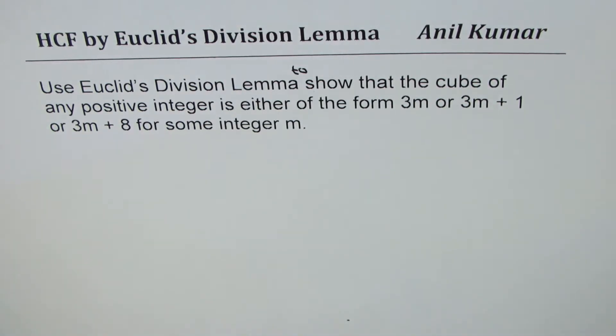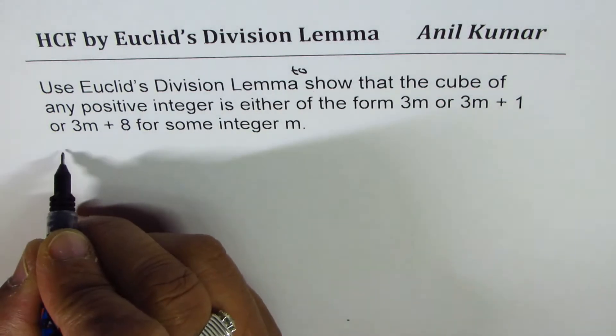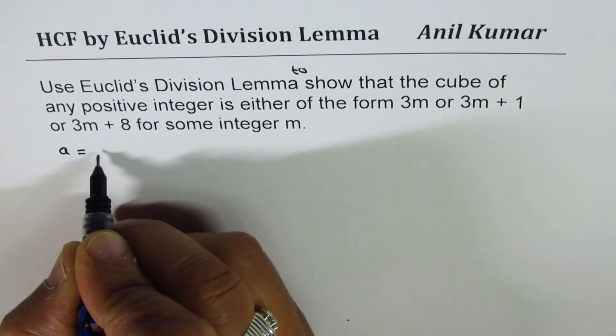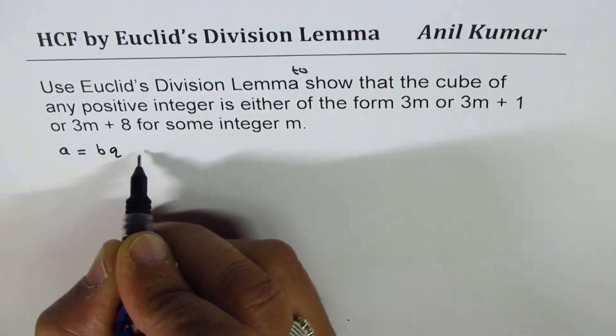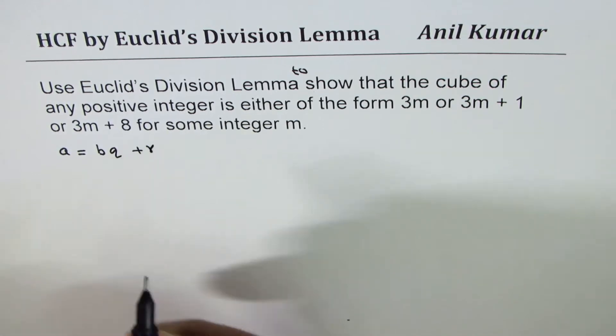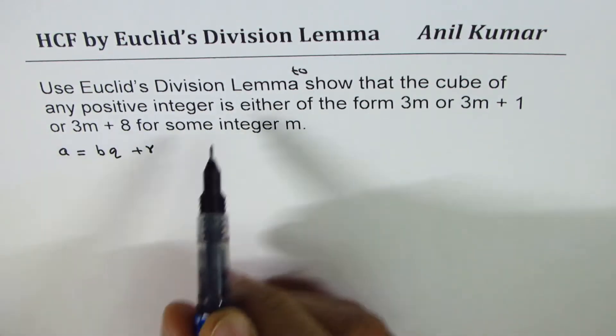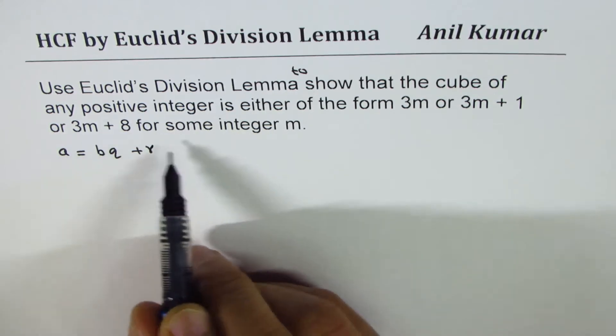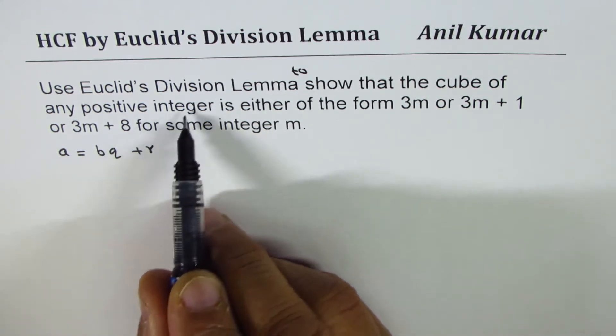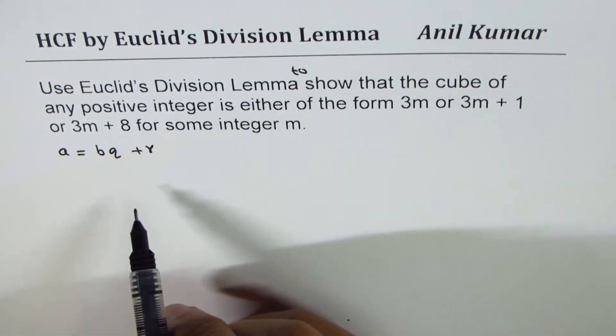We'll begin with what Euclid's division lemma is, which is A equals BQ plus R. We are working in this set of integers for the time being. This is valid for all real numbers. Integers are also real numbers.